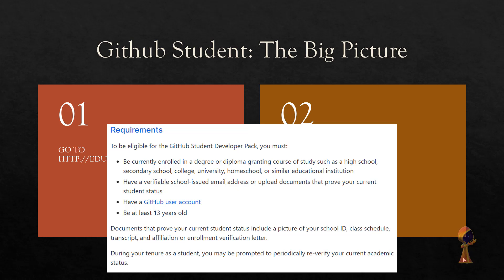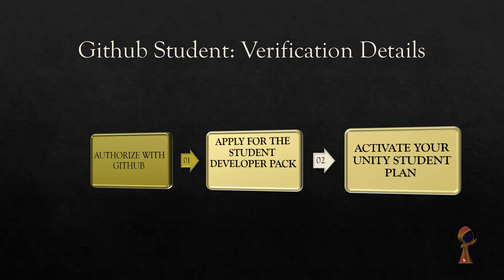You are now a part of GitHub Student. One interesting thing is that they will keep checking that you remain a student over the period of time. Once you have GitHub Student, you authorize with GitHub, apply for the Student Developer Pack, and finally you get to activate your Unity student plan. You can apply for the Student Developer Pack and activate your Unity student plan, which is very useful because it uses the authentication from GitHub.